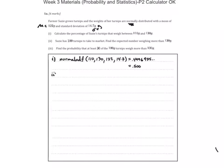So part two. Susie has 100 turnips to take to the market. Find the expected number weighing more than 130. So what we'd want to do is, first of all, expected value would equal the number of turnips times the probability. But we need to find the probability that said turnip weighs more than 130. So I've got to find that probability.